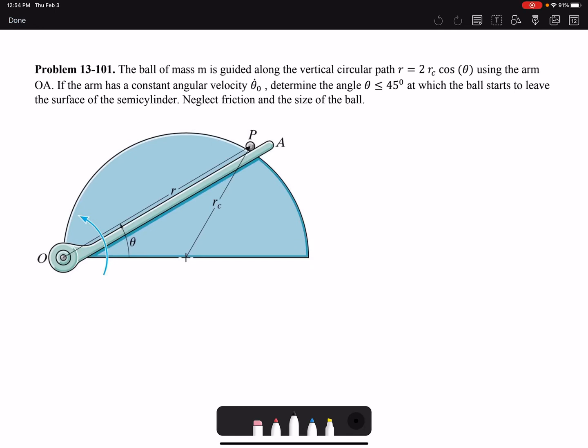Hello everyone, in this video I'm going to solve problem 101 of chapter 13. The ball of mass M is guided along the vertical circular path R equals 2Rc cosine theta, where Rc is the radius of the curvature.